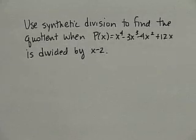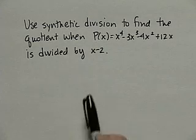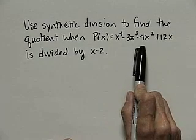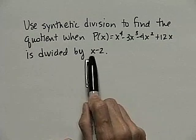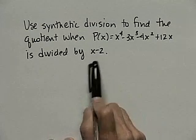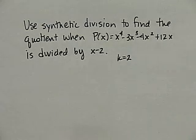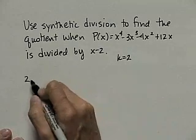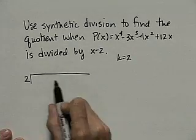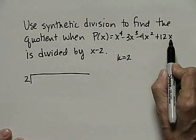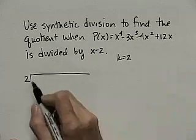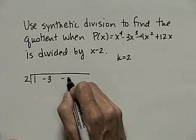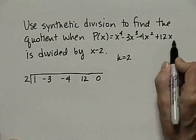Let's continue with our discussion of polynomial functions and look at synthetic division. We're going to use synthetic division to find the quotient when p of x equal x to the 4th minus 3x cubed minus 4x squared plus 12x is divided by x minus 2. Synthetic division only applies if the divisor is of the form x minus k; this divisor has k equal to 2. We set up the division using 2 as our divisor, writing the coefficients from the polynomial: 1, negative 3, negative 4, 12, and 0 for the constant.